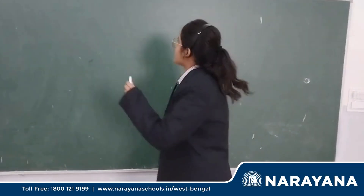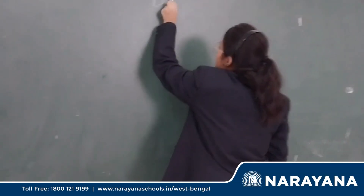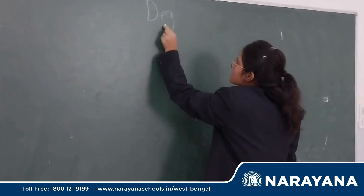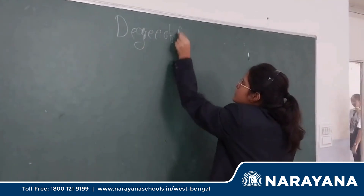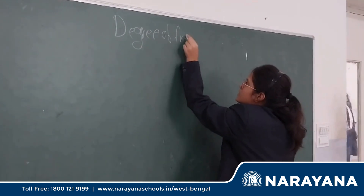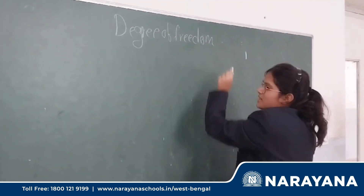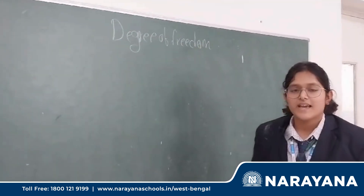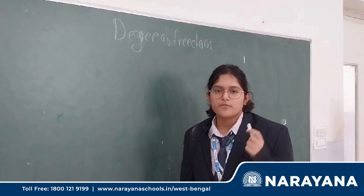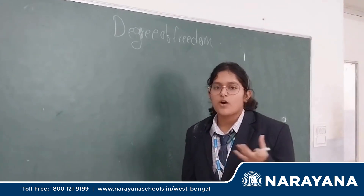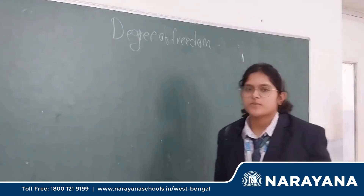About the degree of freedom — what does this term tell us? It says that the minimum number of ways a substance or a body can move in whichever position.